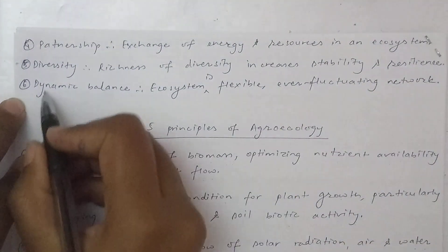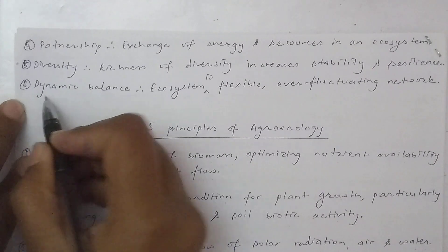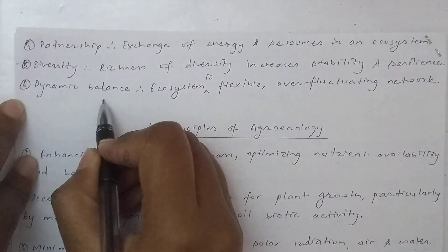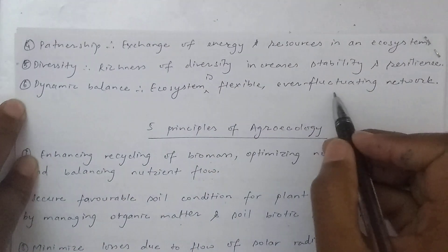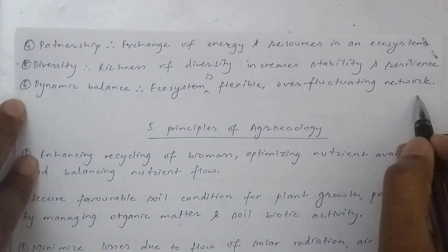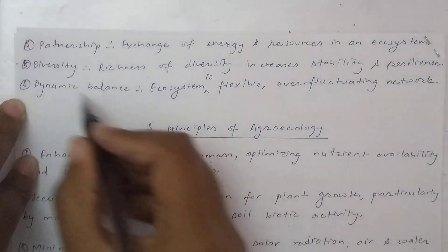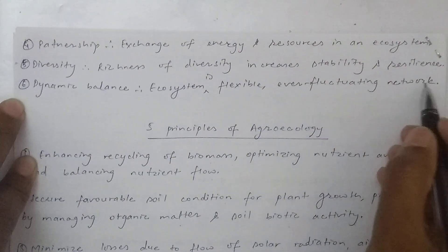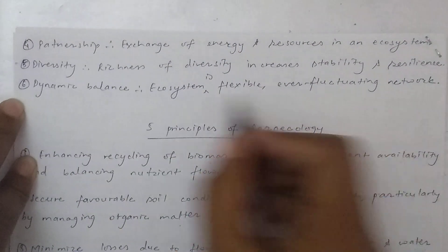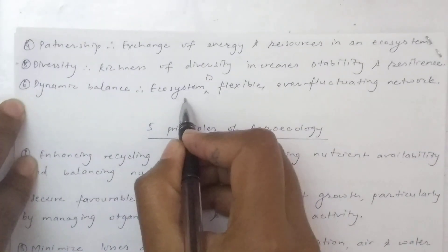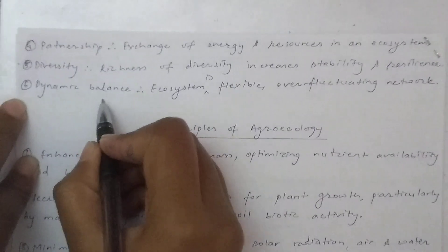The sixth principle is dynamic balance. The ecosystem is a flexible and ever-fluctuating network, maintaining dynamic balance.